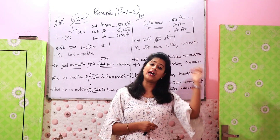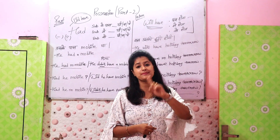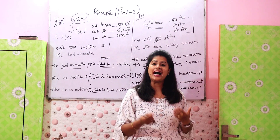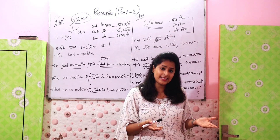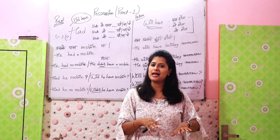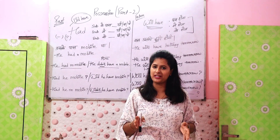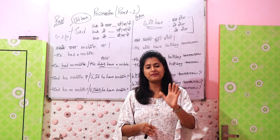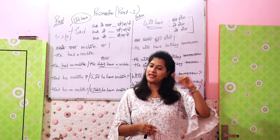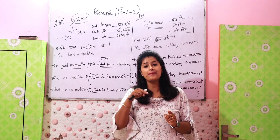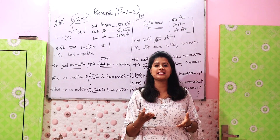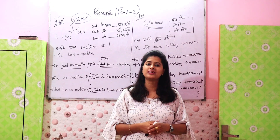Then say five things you had — jo aapke paas pehle tha lekin ab nahi hai. For example: 'I had a doctor set,' 'I had a fear of darkness' — ab aapke paas ye cheezein nahi hain. Then say five things you didn't have — paanch aisi cheezein jo pehle aapke paas nahi thin lekin ab hain. For example: 'I didn't have a personal phone,' 'I didn't have knowledge of English.'